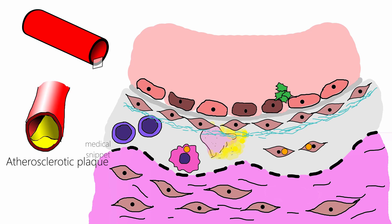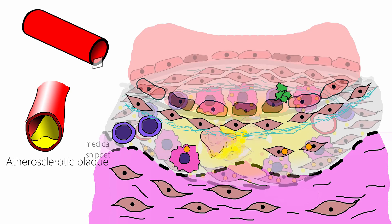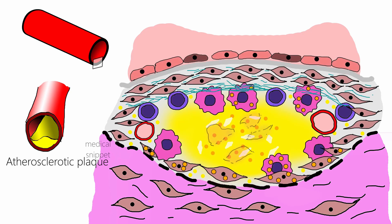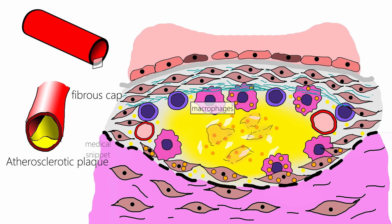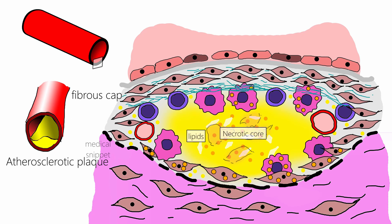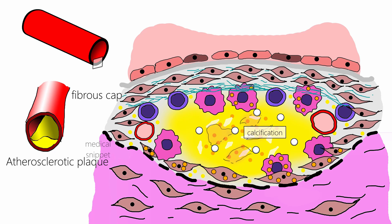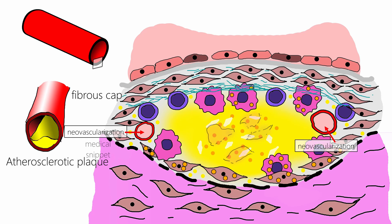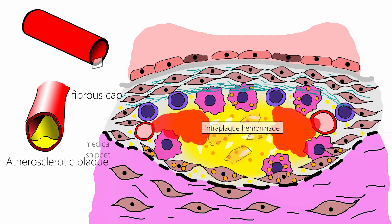Plaques are white-yellow and encroach into the lumen of the artery. Microscopically, the atherosclerotic plaque has a fibrous cap composed of smooth muscle cells and collagen. Just beneath the fibrous cap is a more cellular region consisting of macrophages, T-cells, and smooth muscle cells. Deep to the fibrous cap is the necrotic core consisting of lipids, dead cell debris, and foam cells. The plaque can undergo calcification, and neovascularization can occur at the base of the plaque by endothelial proliferation of vasa vasorum, which travel through the tunica media and reach the base of the plaque, possibly responsible for hemorrhage into the plaque.